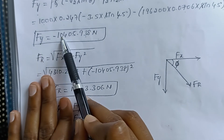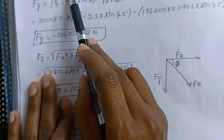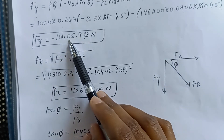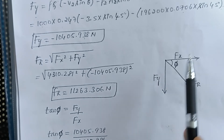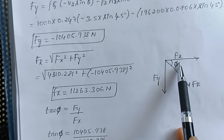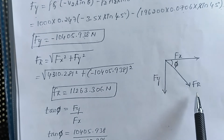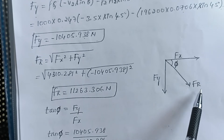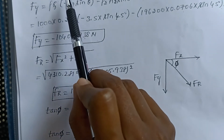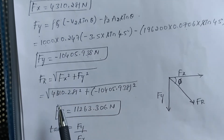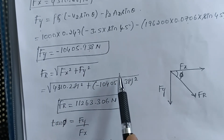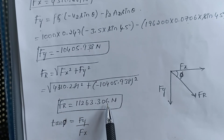We got a positive value of Fx and a negative value of Fy. Positive Fx means it acts in the rightward direction, and negative Fy means it acts in the downward direction. The resultant force FR = sqrt(Fx² + Fy²). Substituting Fx = 4310.281 and Fy = 10405.938, we get FR = 11263.306 Newtons.